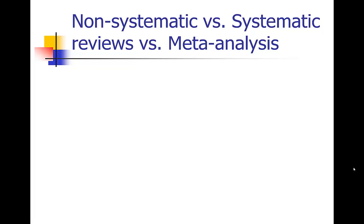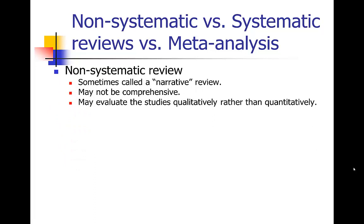There are three basic types of review articles. There's non-systematic, systematic, and meta-analysis. A non-systematic review is probably the most common type — sometimes called a narrative review. What distinguishes it from the other two is that it's a less rigorous review. It may not be completely comprehensive; it may not look at all of the papers on a particular topic. It tends to be more qualitative than quantitative, so you're essentially saying 'this was a good study because of these reasons' without necessarily scoring the studies.